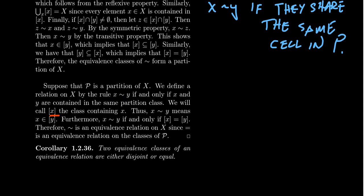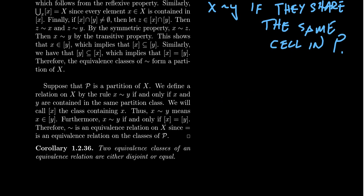So let's define a relationship using P by saying that X and Y are related to each other if X and Y are contained inside the same partition class. Why is that going to be an equivalence relationship? We say X-box is the class that contains X. X is related to Y means X and Y are inside the same class — that is, these two things are equal to each other. You can show X is related to X because X is inside its own class. You get the symmetric property because equality is symmetric. You get that this is transitive because equality is transitive. So a partition always forms an equivalence relationship and vice versa.